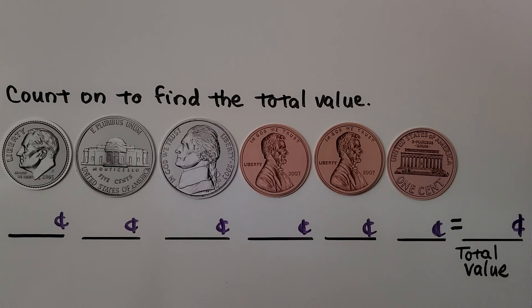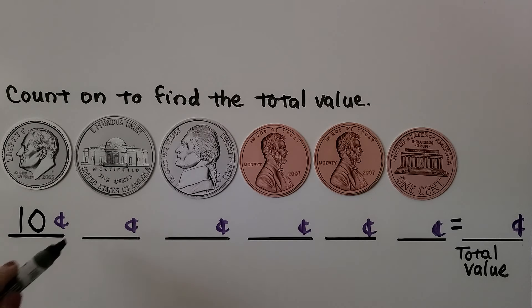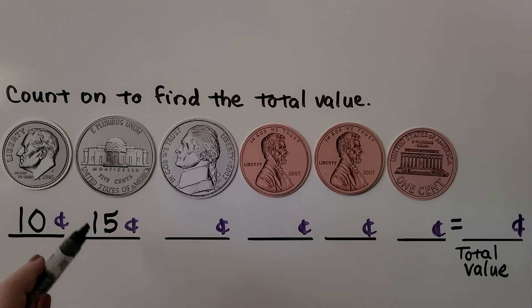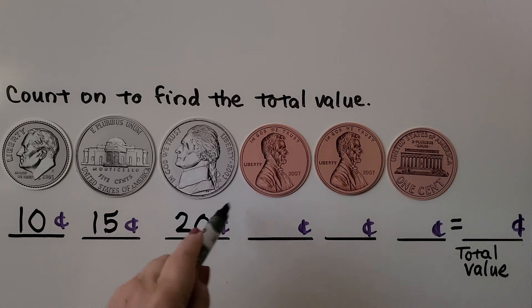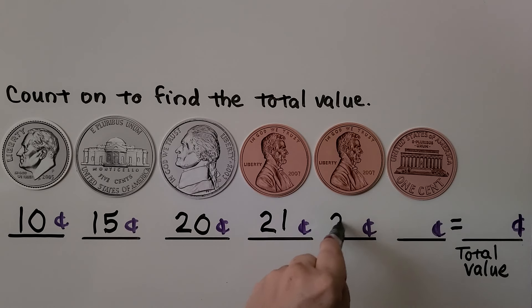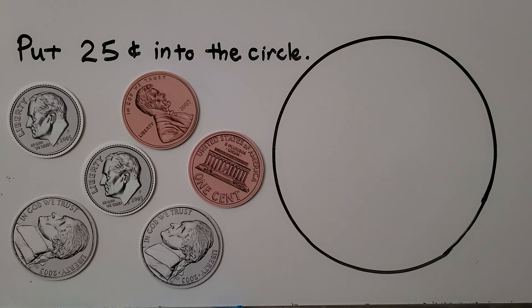Let's try it again. We need to count on to find the total value. We start with the greatest value coin, the dime, worth 10 cents. We add a nickel of 5 cents: 10 plus 5 is 15. We add another nickel: 15 plus 5 is 20 cents. Now we add pennies by 1's: 21, 22, 23. The total value of these coins is 23 cents.